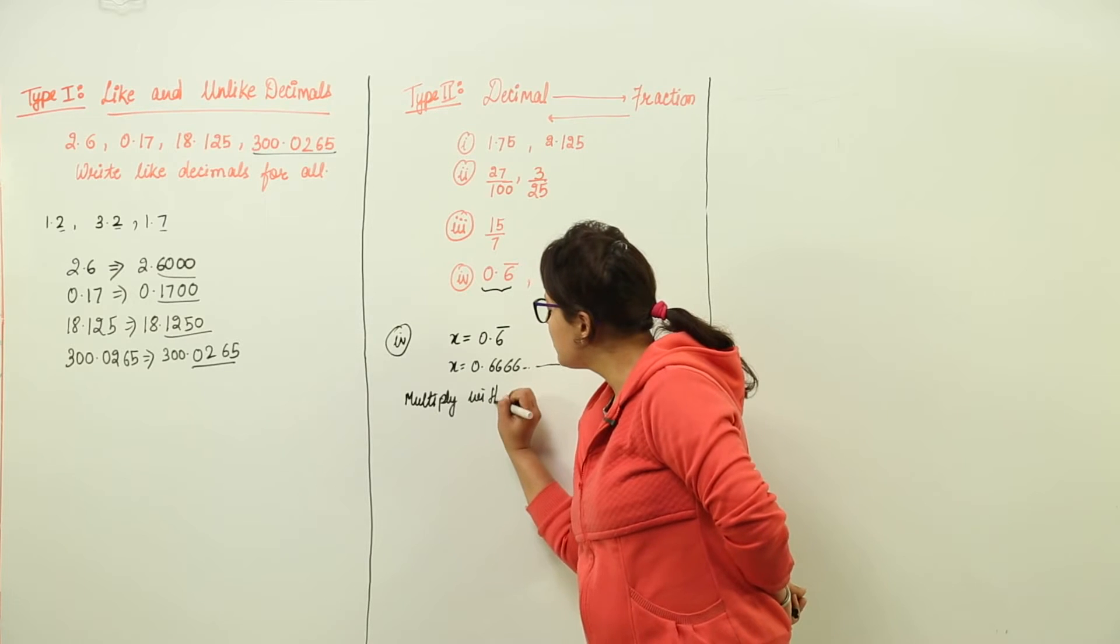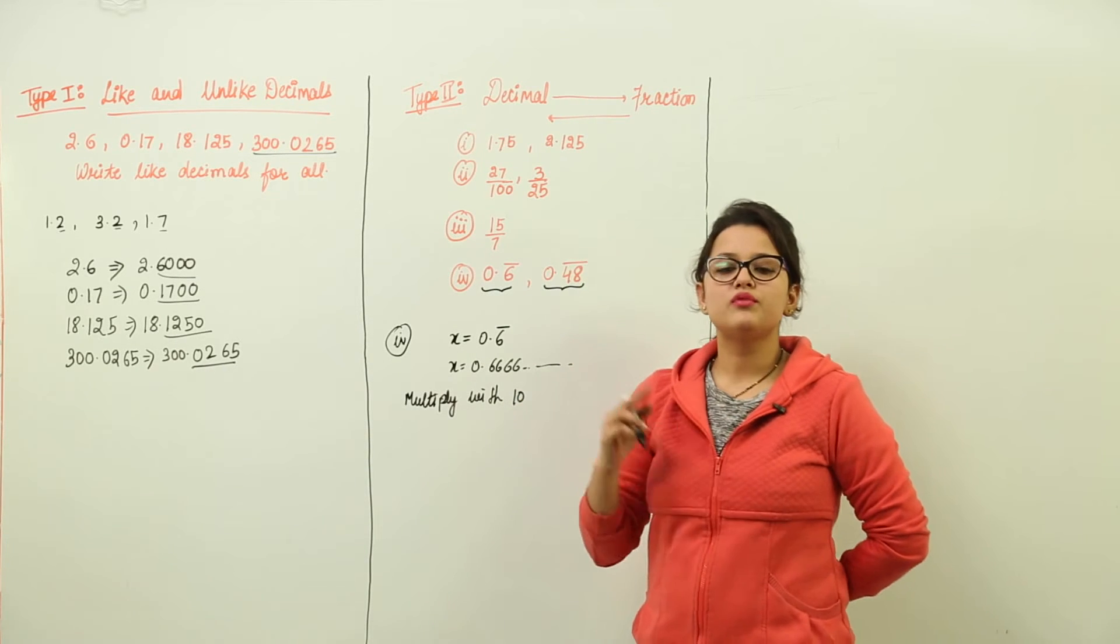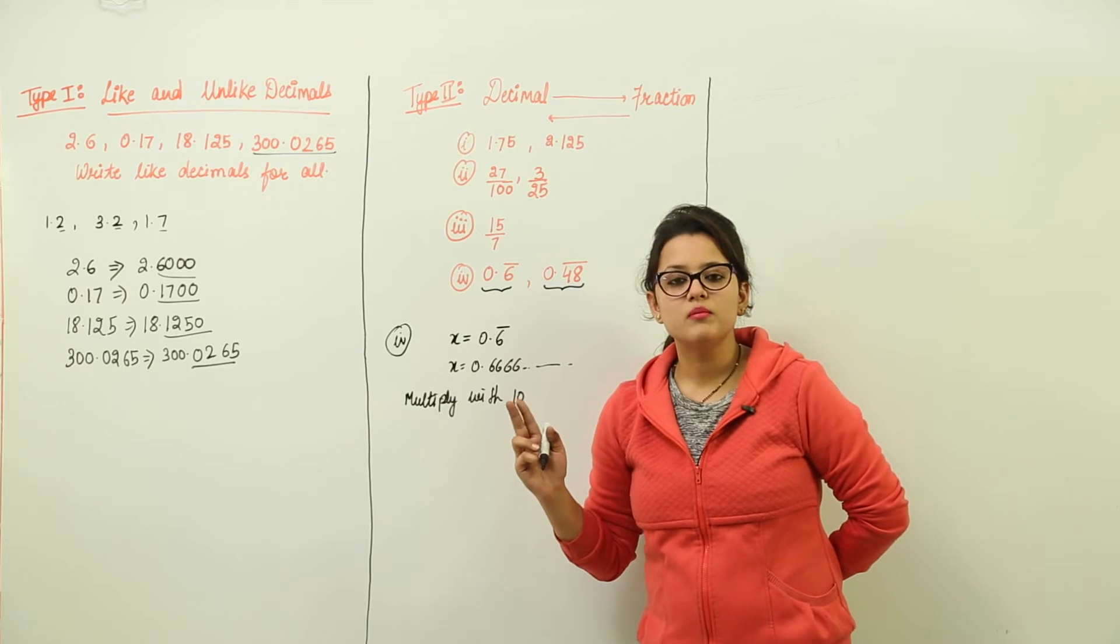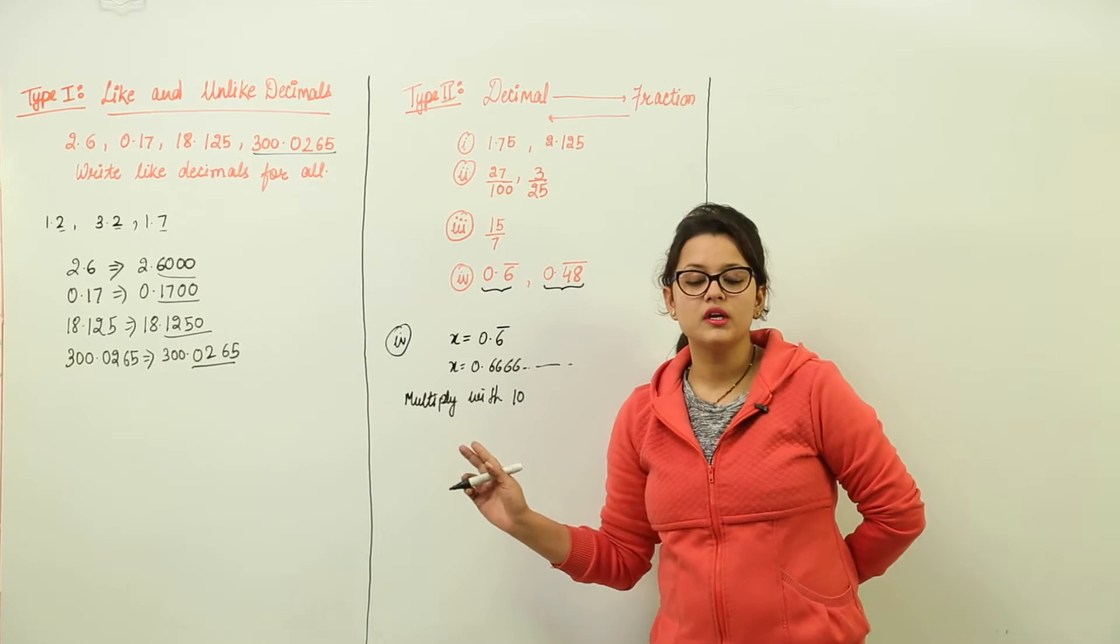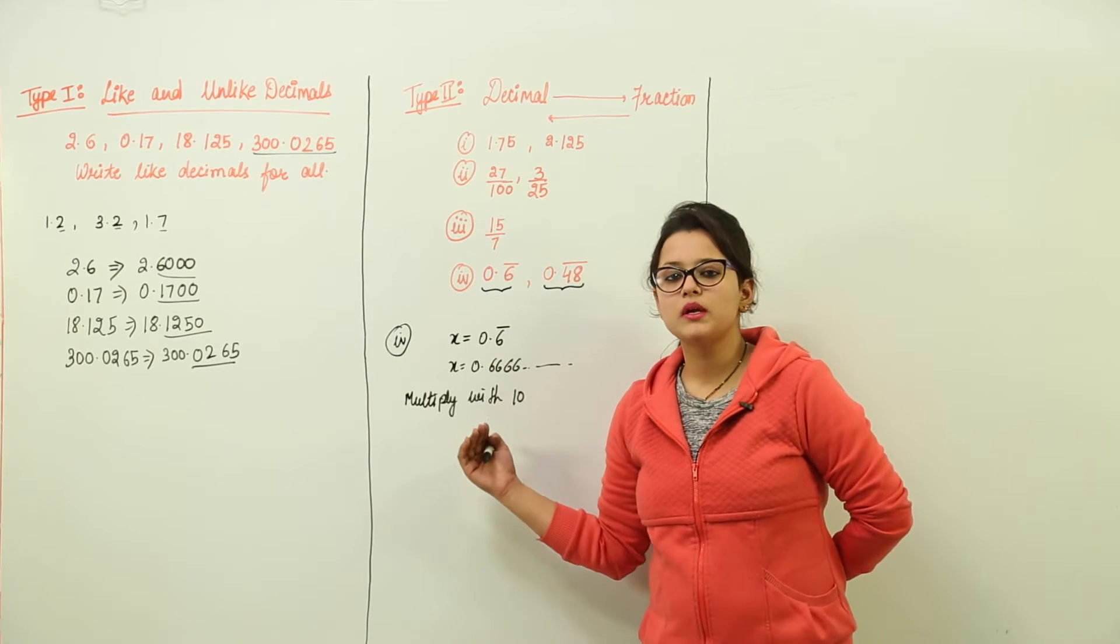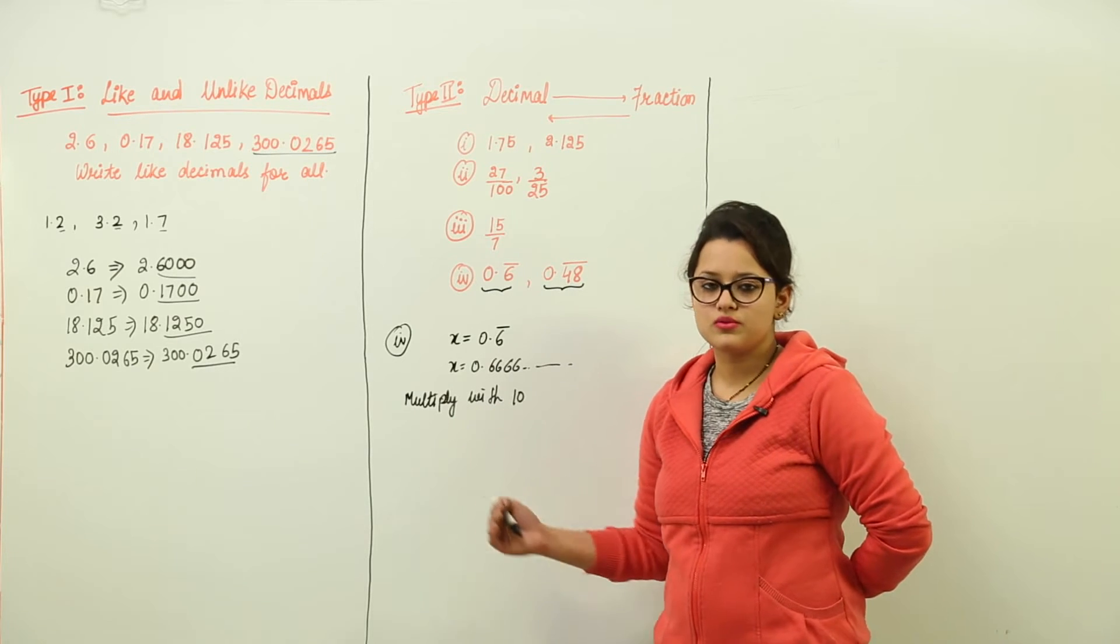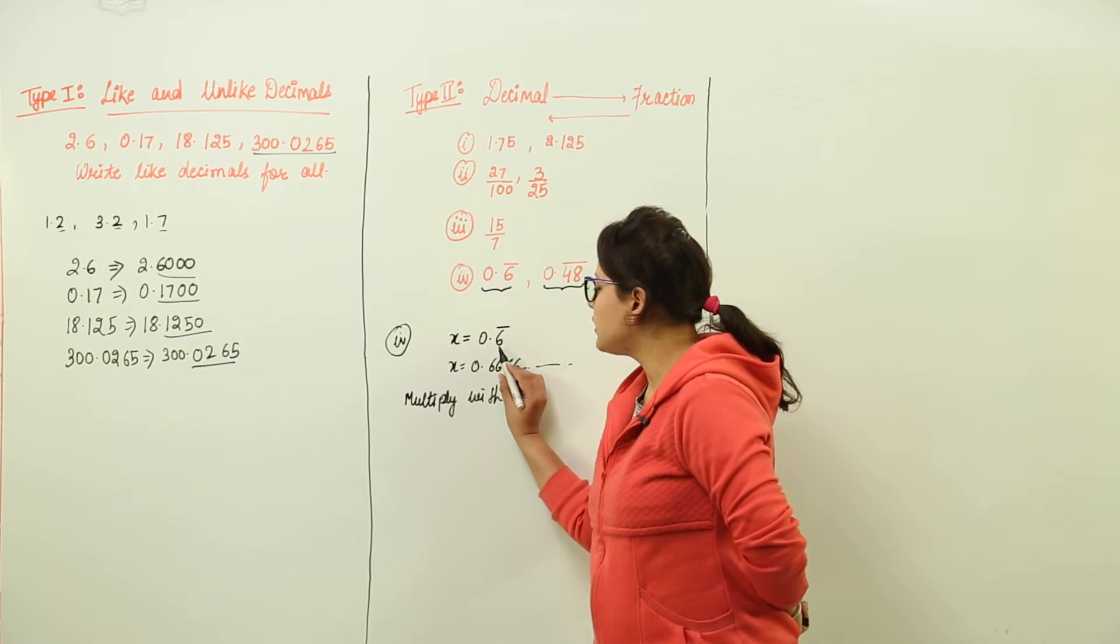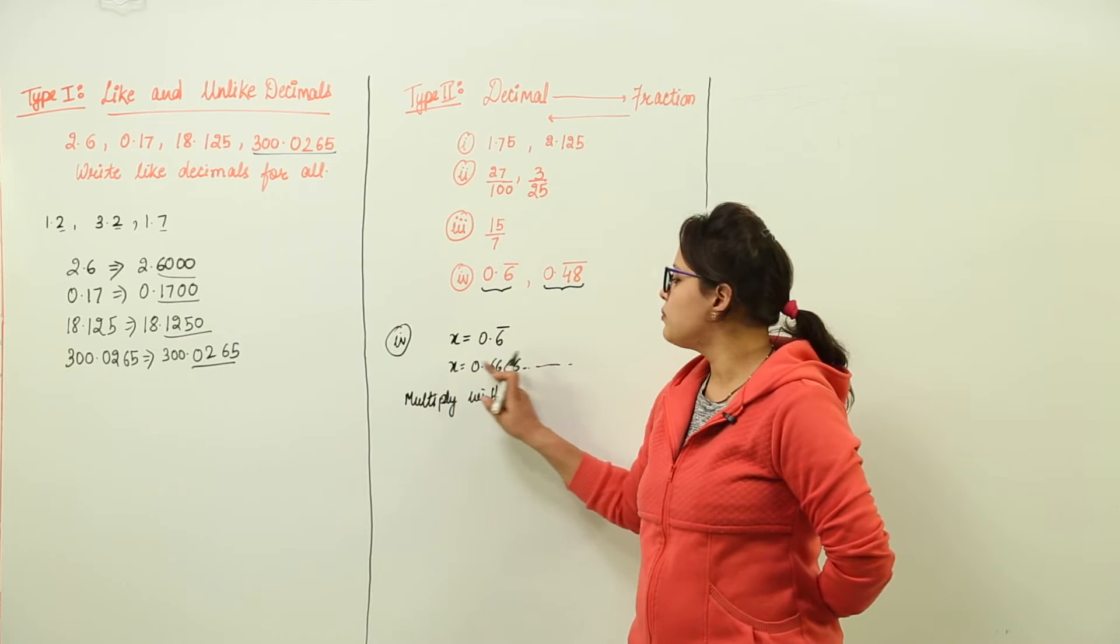So we multiply both sides with 10. Why 10? Because only one digit was repeating. If two digits are repeating, we multiply both sides with 100. If three digits are repeating, we multiply both sides with 1000, and so on. So because one digit was repeating, I multiply both sides with 10.